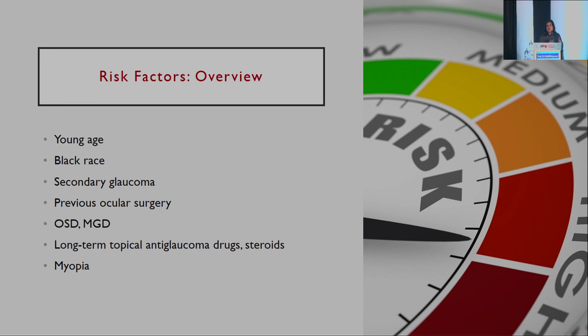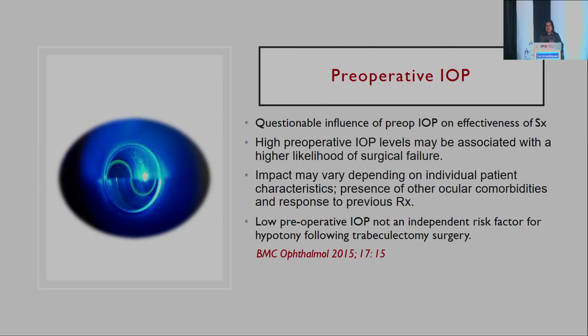It starts right from the beginning when the patient comes to you through your decision-making. The patient's age, their race, the nature of the glaucoma, any prior ocular surgery, ocular surface disease, blepharitis, lid status, long-term topical anti-glaucoma drugs, and refractive status in terms of myopia — all of these influence the outcome of trabeculectomy.